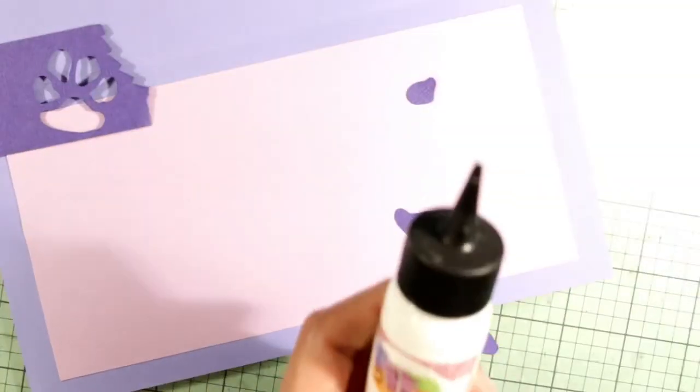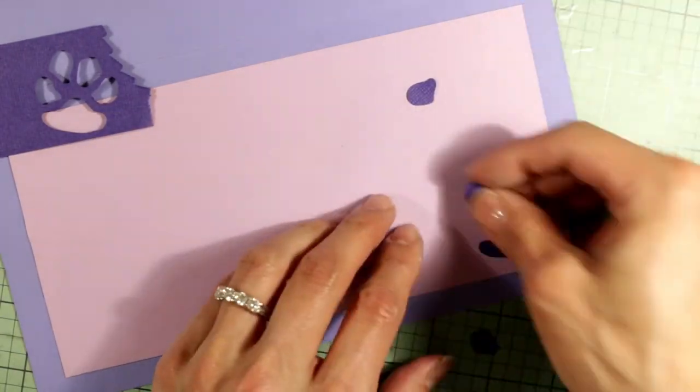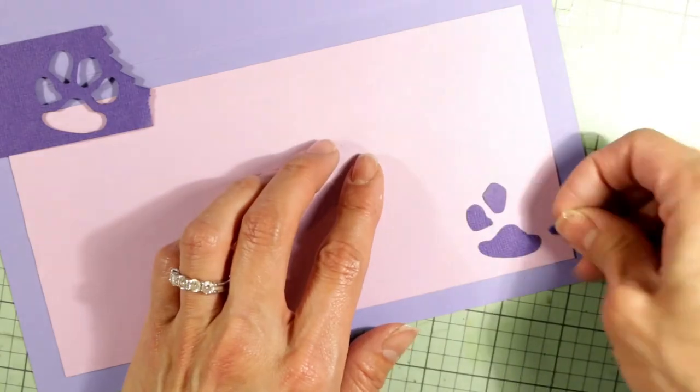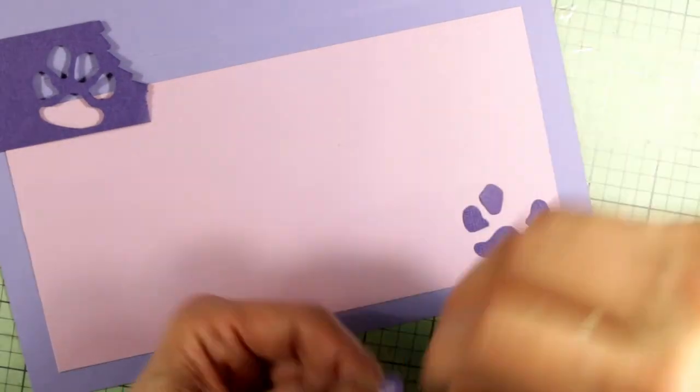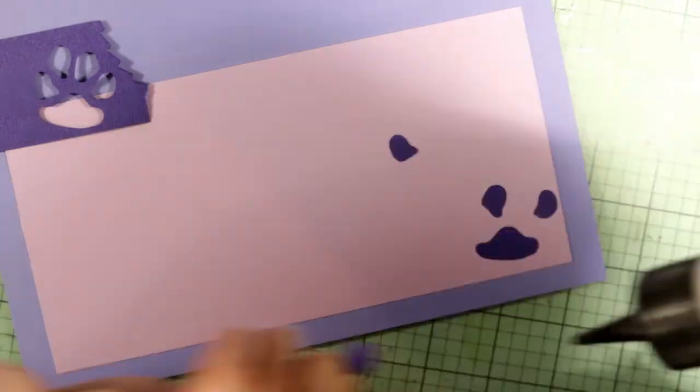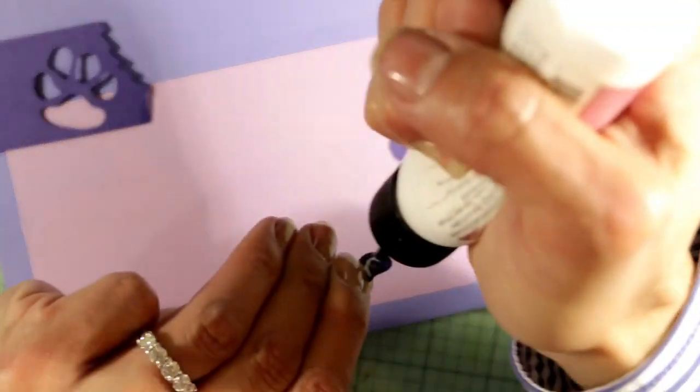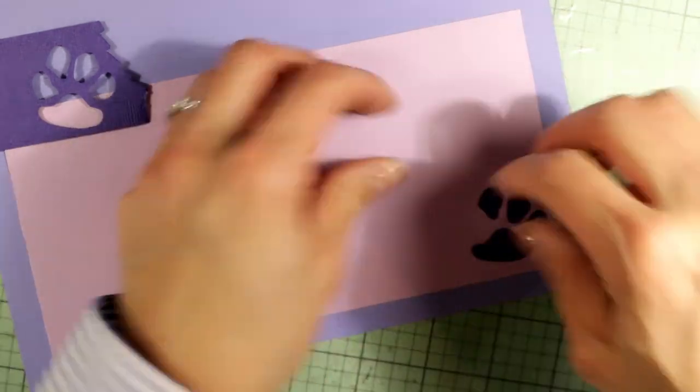I decided to bring out an old Fiskars paw punch. I think this is retired but it's called Furry Friends Paw and it's a great Fiskars punch. I'm just going to add one of those to the lower right hand corner of the card liner just to add a little interest on the inside of the card, and that's the completed inside liner for the card.